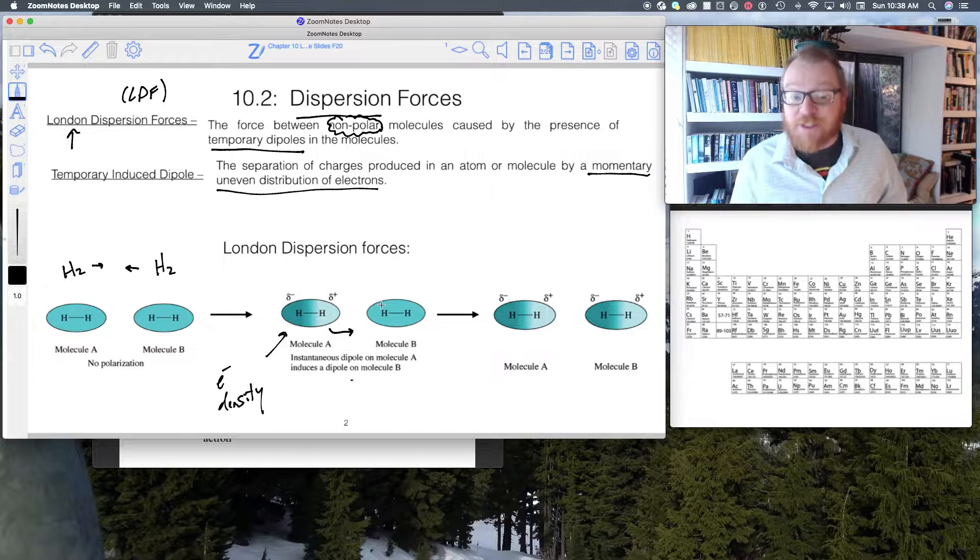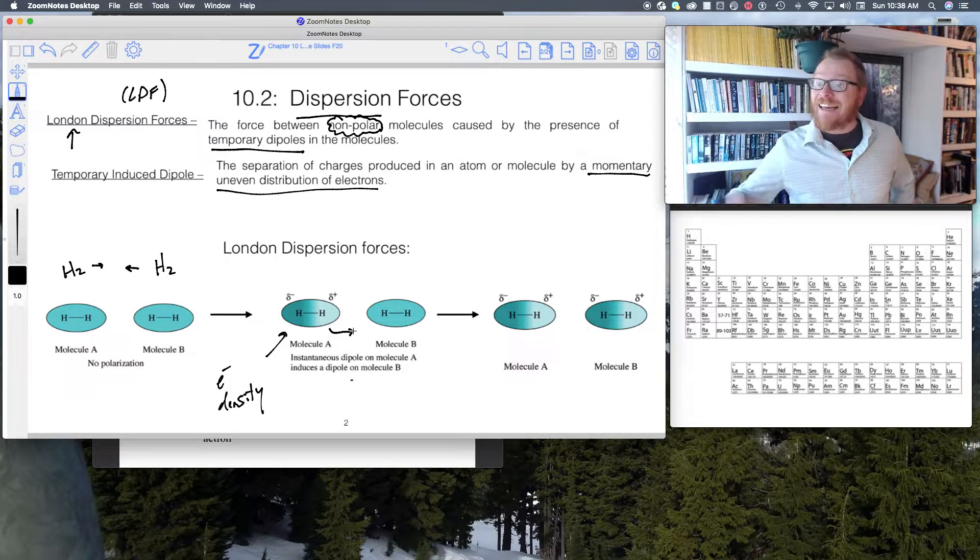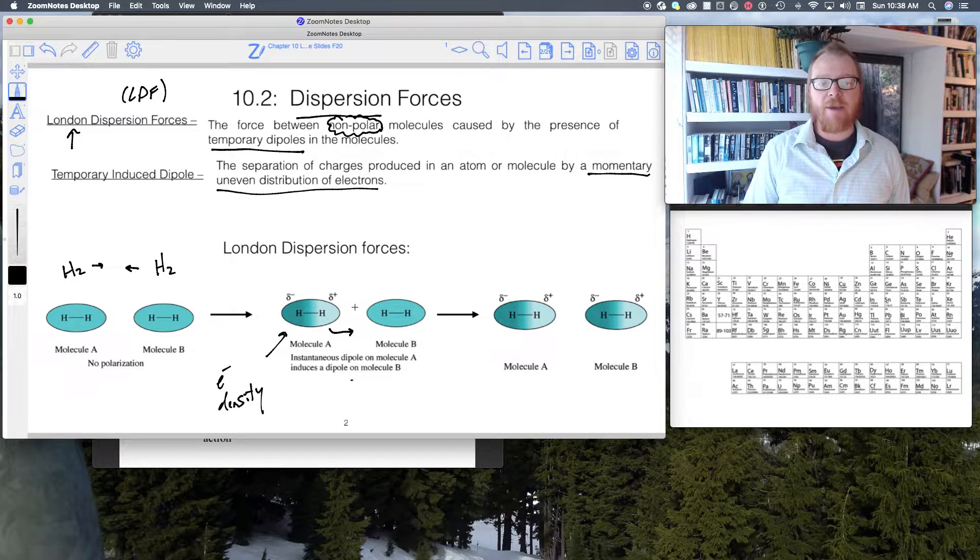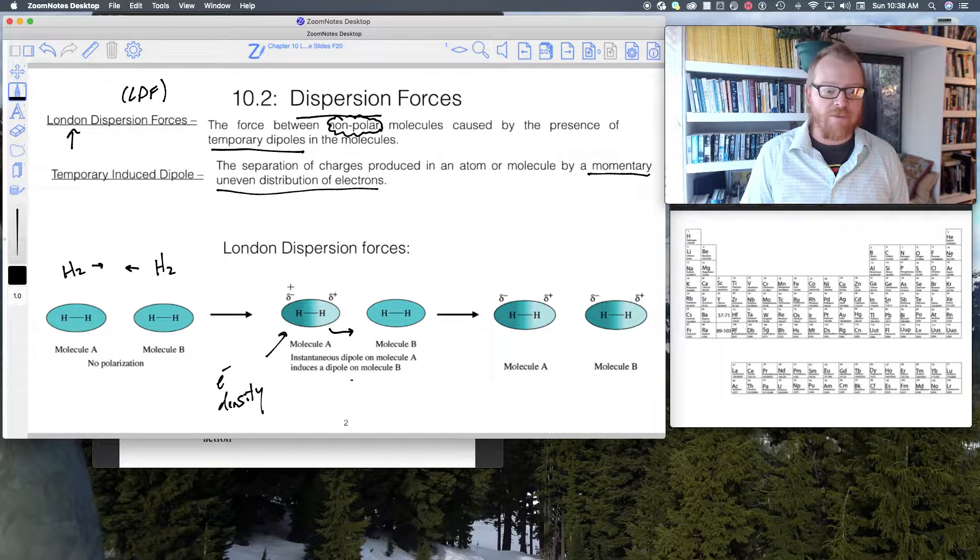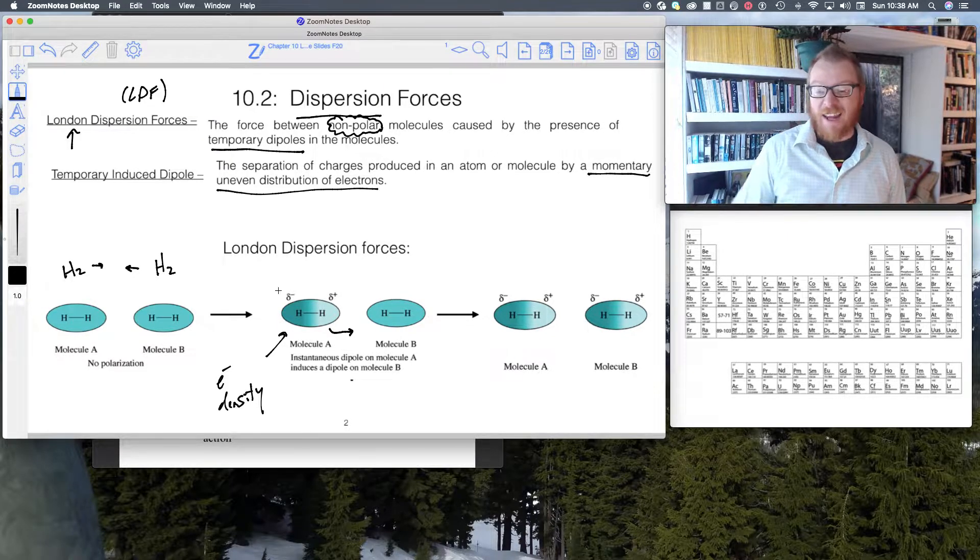As molecule A gets really close to molecule B, the electrons that are surrounding this molecule are repelled by the electrons in the neighboring molecule.